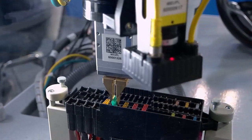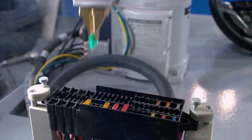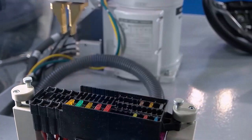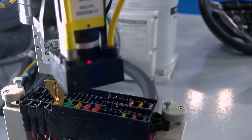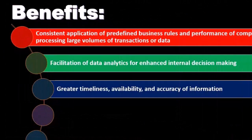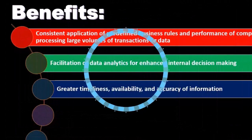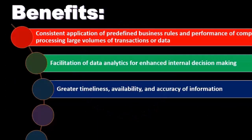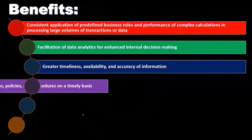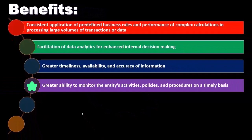Accuracy should also increase if we use the system well. A system doesn't guarantee accuracy, because we could still find ways to have problems. But if we design the system well and know what it does well — calculations — then it's going to be accurate with regards to those calculations as long as we put the input in correctly.